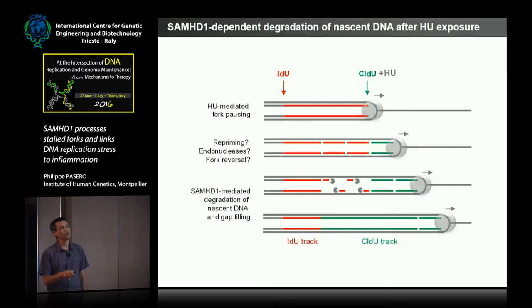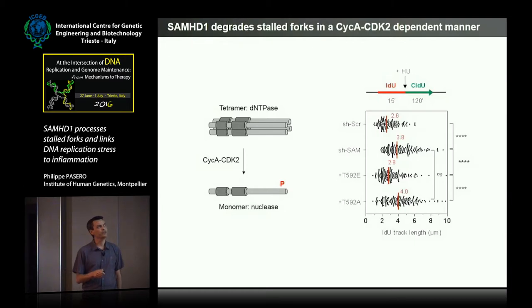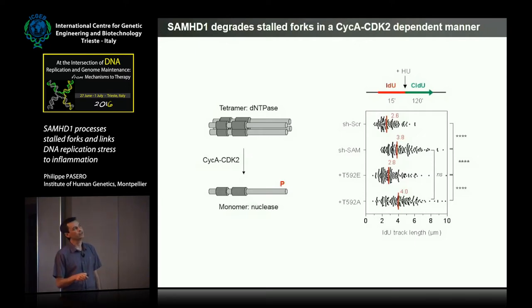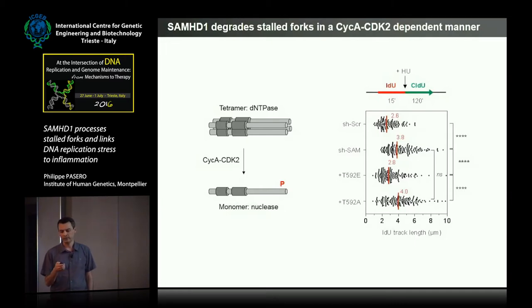In the absence of SAMHD1, you have no degradation, no slowdown of the fork, and the fork actually seems to move faster. We tested whether this degradation of the IdU track was dependent on phosphorylation: in SAMHD1-depleted cells the track is protected and is actually much longer. It is degraded when we complement with the phosphomimetic mutation, but not in the absence of phosphorylation of SAMHD1. So it looks like phosphorylation of SAMHD1 by Cyclin A is promoting the degradation of HU-arrested forks.